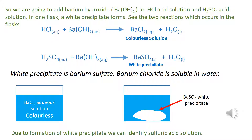We are going to add barium hydroxide to the HCl acid solution and the sulfuric acid solution. In one flask a white precipitate forms. See the two reactions which occur in the flasks. The white precipitate is barium sulfate. Barium chloride is soluble in water. Due to the formation of the white precipitate we can identify the sulfuric acid solution.